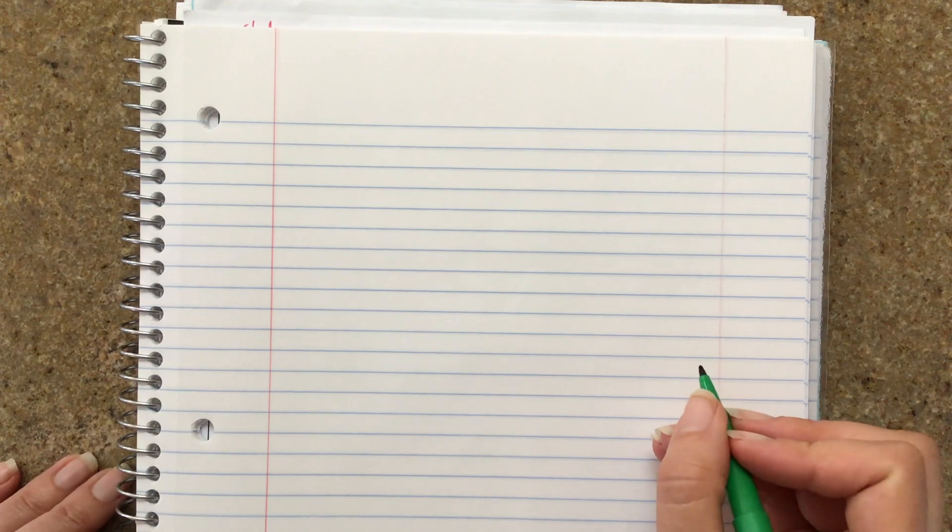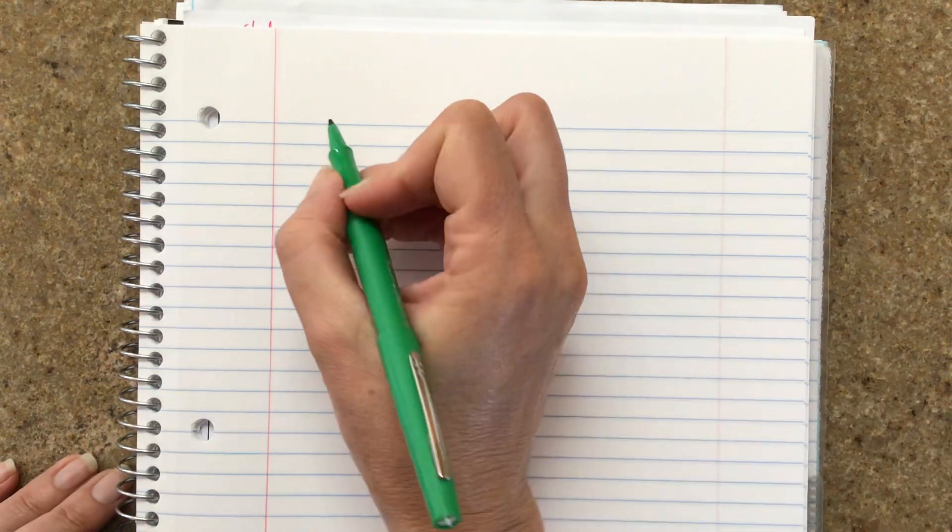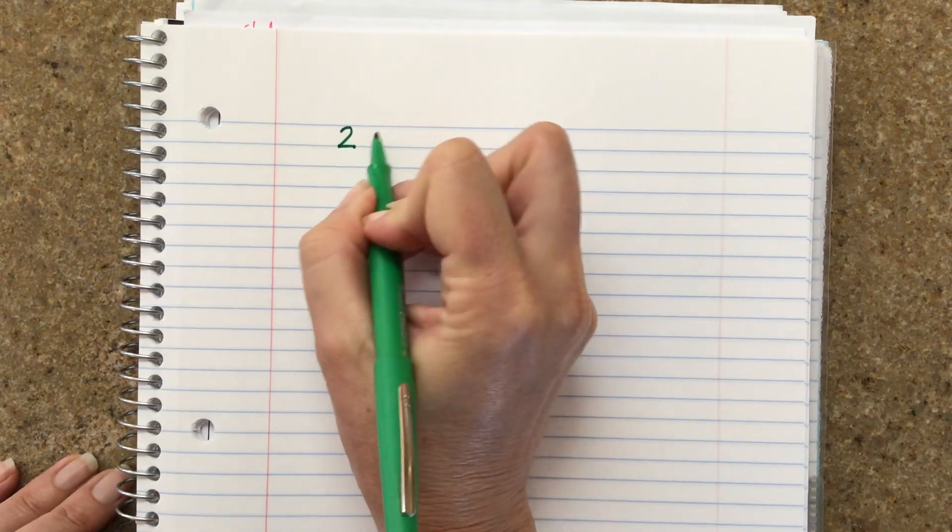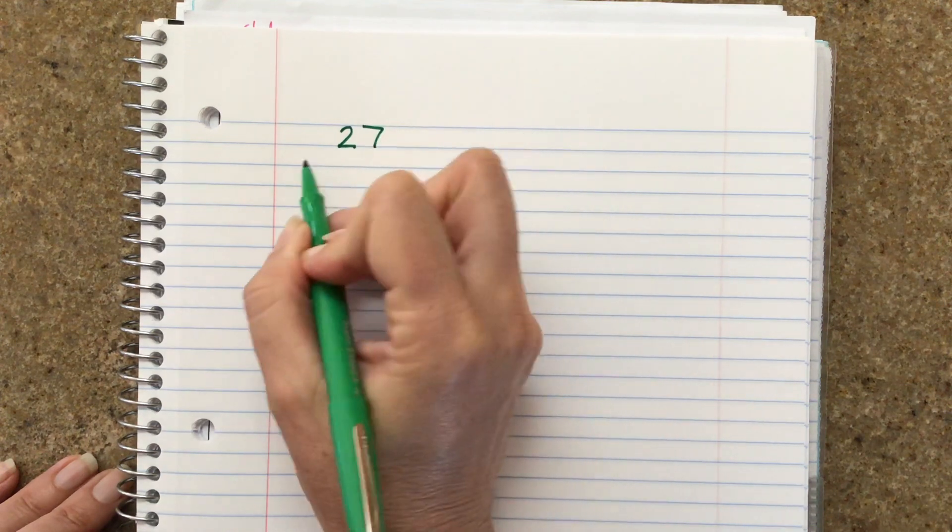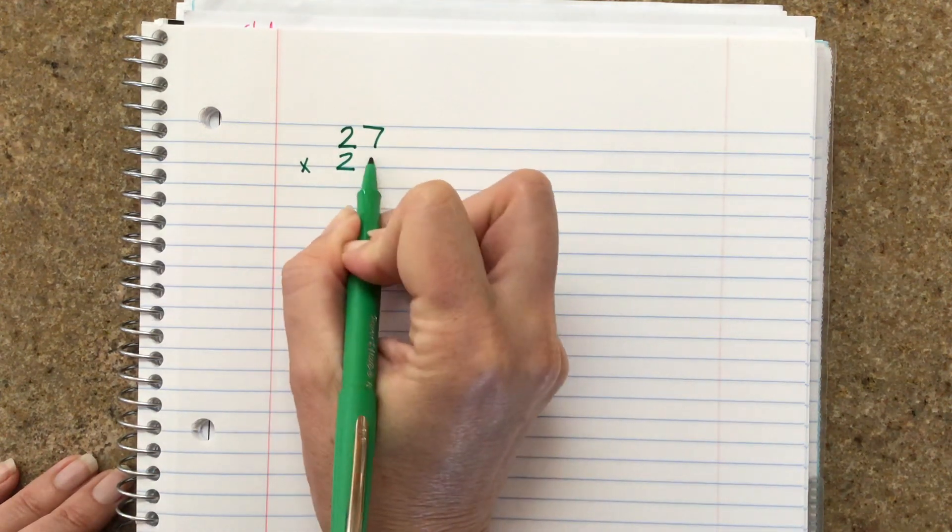Hello fourth graders! Today we're going to talk about double-digit multiplication. So I'm going to start by showing you how I learned it when I was in fourth grade using the example 27 times 24.